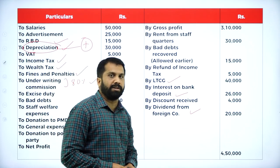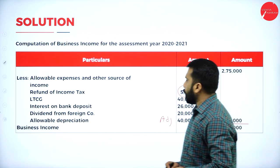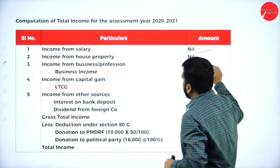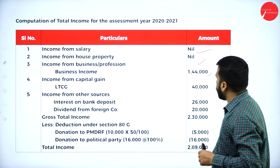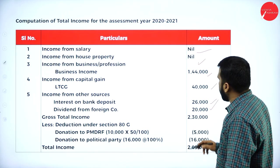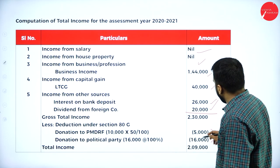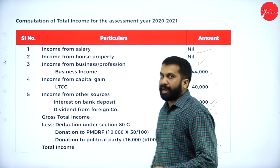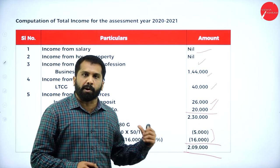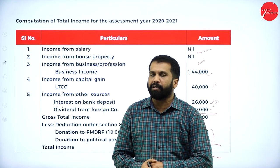Refund is not part of your business — you are supposed to consider it. After all calculations, you get a total business income of 1,44,000. Now total income: income from salary — nil; house property — nil; business income — 1,44,000; long-term capital gain — 40,000; interest — 26,000; dividend — 20,000. Total income is 2,30,000, minus two donations of 5,000 and 16,000 = 21,000. Your answer is 2,09,000.